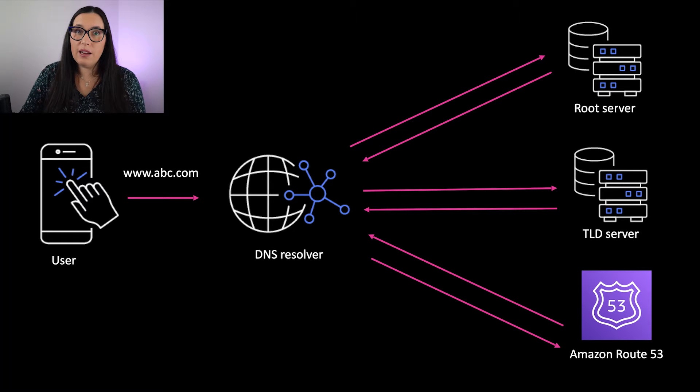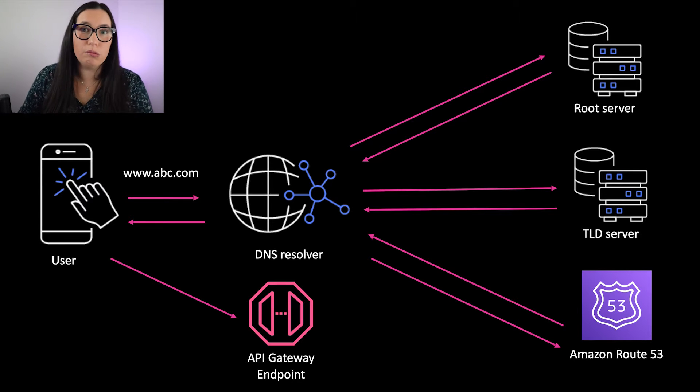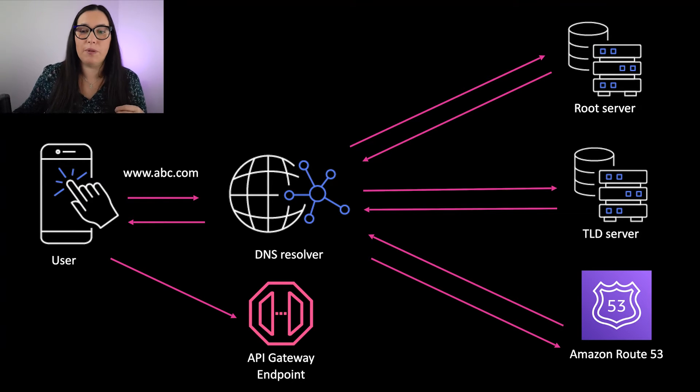When we get that IP address, it is returned to the browser, and the browser uses it to invoke the resource you want to call — in this example, an API Gateway endpoint. So what are hosted zones? Basically, a hosted zone is something you create in Route 53 inside a domain, and then you put a list of records in it.